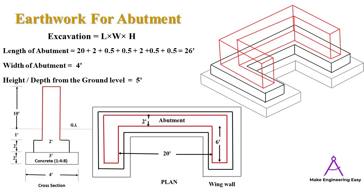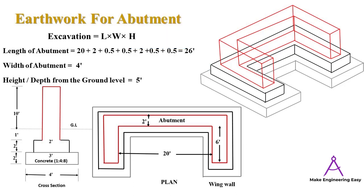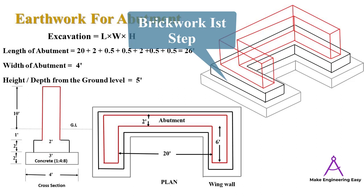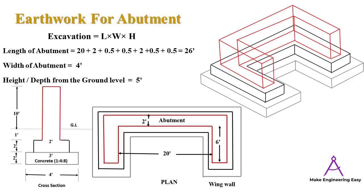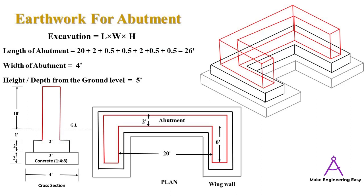First of all, a four-feet width and two-feet thick concrete with a ratio of 1:4:8 is laid under the foundation of brickwork for the abutment and wing walls. After that, three-feet width and two-feet thick brickwork is laid in the first strip of the abutment and wing walls. At last, two-feet width and 11-feet height of brickwork is laid as the second strip.